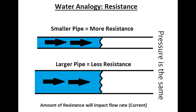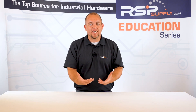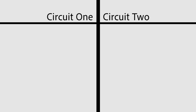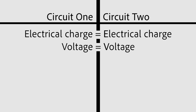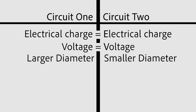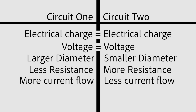In this scenario, the pressure is the same at the end of the pipe, but the larger pipe is allowing more water to flow through it. In regards to electricity, this would be represented as two different circuits with the same electrical charge and voltage. However, in one circuit there would be a larger conductor or larger diameter wire being used. The circuit with the larger diameter conductor would have less resistance, therefore would allow more current to flow. The circuit with the smaller diameter conductor would allow less current to flow through it.